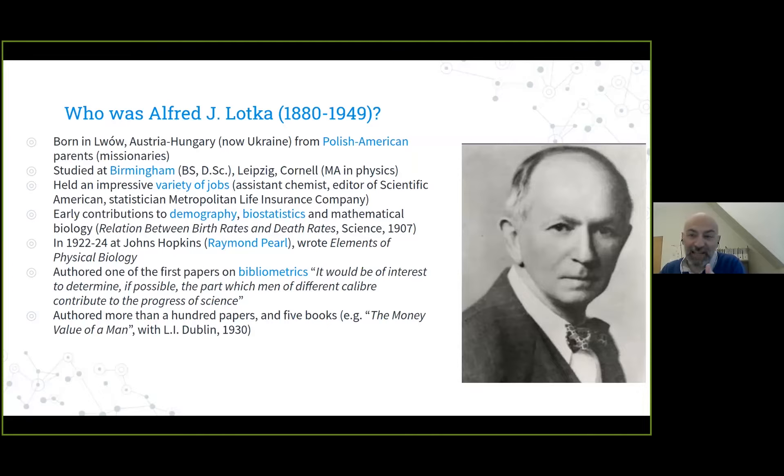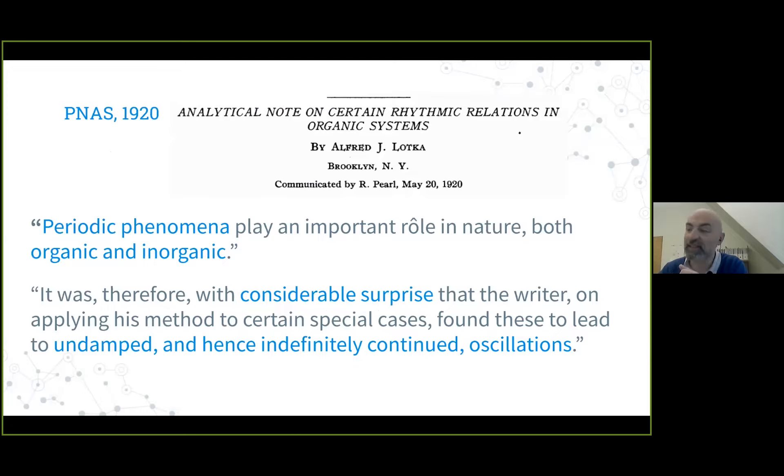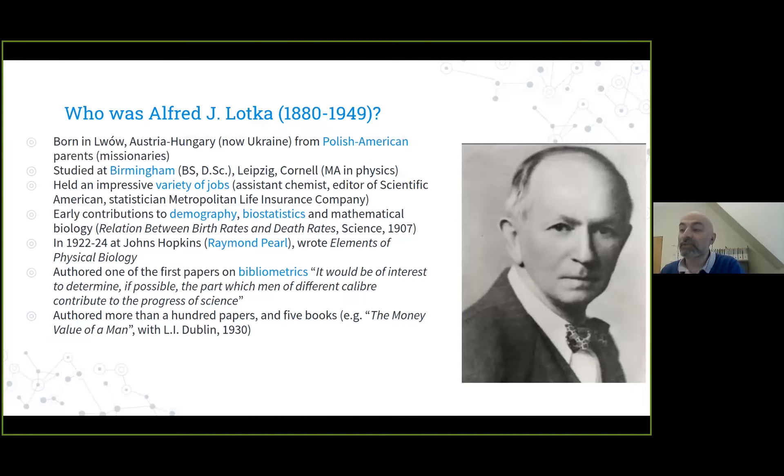He made contributions to a variety of fields, most recognizable for demography and biostatistics. But in 1920, he published this paper. In 1922 he joined Raymond Pearl, who communicated this paper to PNAS, to write his famous book Elements of Physical Biology. Among other things, he also started the field of bibliometrics, studying productivity and the number of scientists producing papers at certain scaling relationships. He ended up writing more than 100 papers and five books, including titles such as 'The Money Value of a Man.'